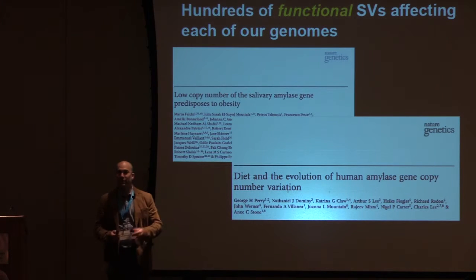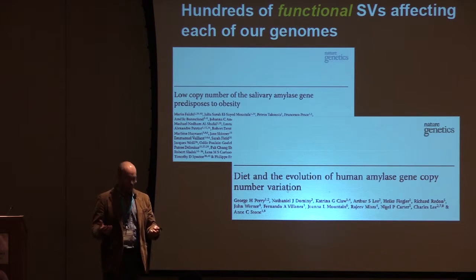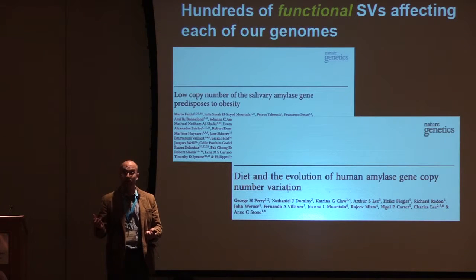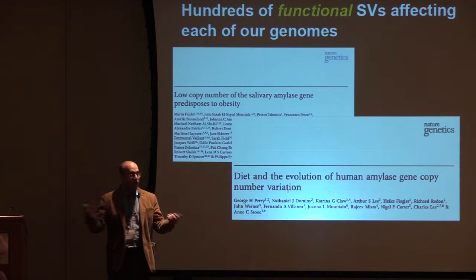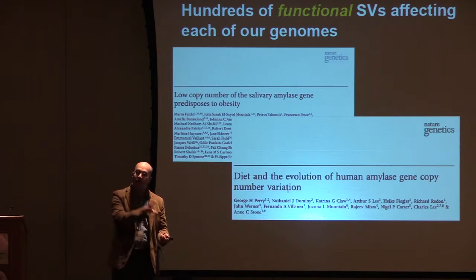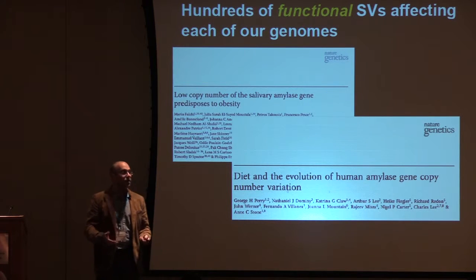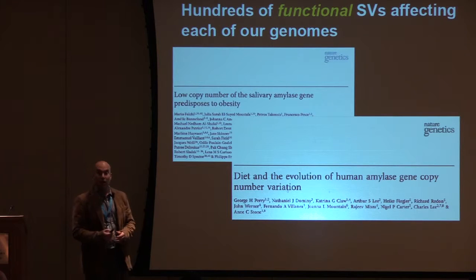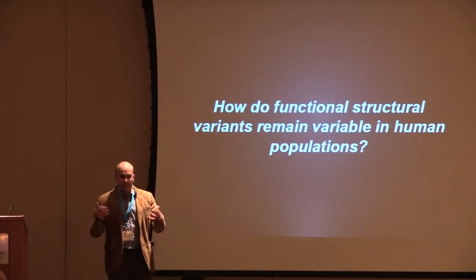There is precedent for functional structural variation. A great example is the salivary amylase (AMY1) copy number, which is associated with starch consumption and helps digest starch. AMY1 copy number varies from 4 to 17 copies in humans — compared to only two diploid copies in chimpanzees — and shows remarkable variation structured around high versus low starch-consuming populations, potentially indicating a response to cultural change. It has also recently been associated with obesity.